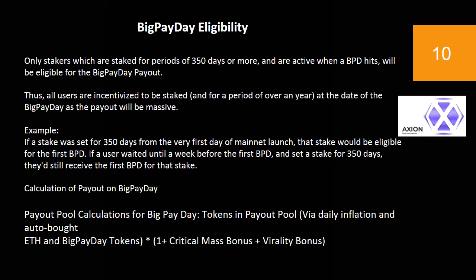Big Pay Day Eligibility. Only stakers which are staked for periods of 350 days or more, and are active when a BPD hits, will be eligible for the Big Pay Day payout. Thus, all users are incentivized to be staked for a period of over a year at the date of their Big Pay Day, as the payout will be massive. Example: if a stake was set for 350 days from the very first day of mainnet launch, that stake would be eligible for the first BPD. If a user waited until a week before the first BPD and set a stake for 350 days, they'd still receive the first BPD for that stake.